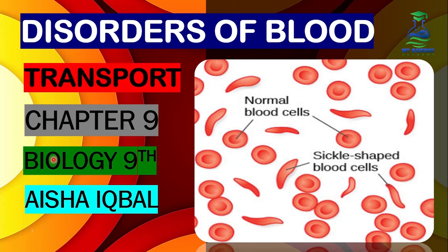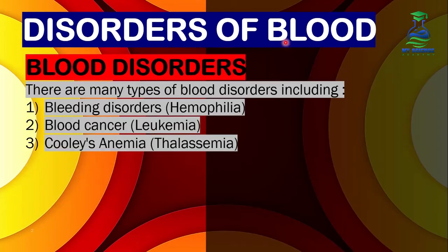Welcome to our channel students in the Biology 9 class. Today we will discuss the next topic of chapter 9, Transport — that is disorders of blood. There are many types of blood disorders, and today we will discuss three main types.